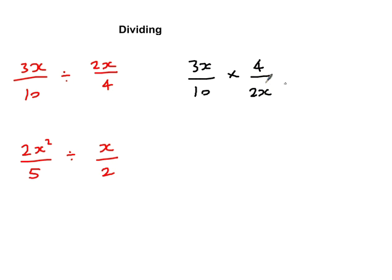So let's simplify this out. So I'm going to get 3x times 4, so that will be 12x. On the bottom, 10 times 2x is 20x. Now this time I can actually simplify. I've got an x on the top and an x on the bottom, so in effect I can just cancel those out. So I end up with 12 over 20.